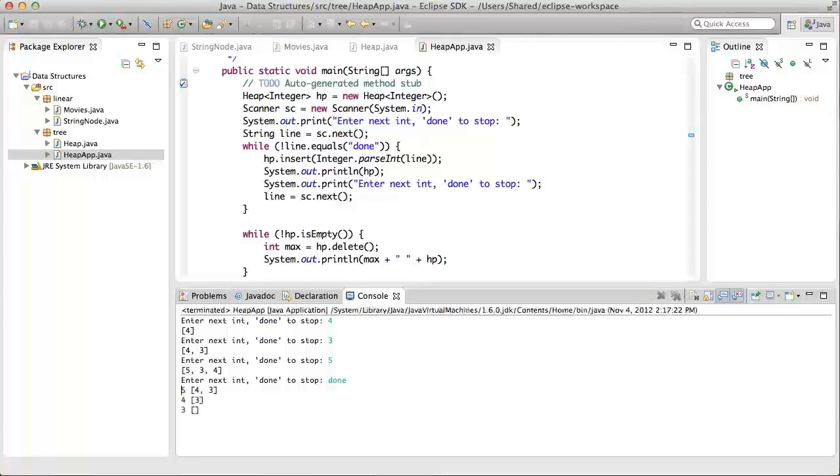So, once we hit done, we have a sequence of deletes. Five comes out first, leaves four and three in the heap. Next out is four. Last out is three. So, the heap items are deleted in decreasing order of values, which is exactly what we expect.